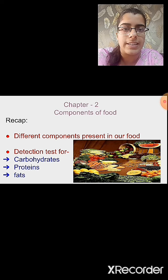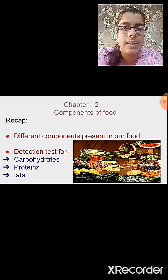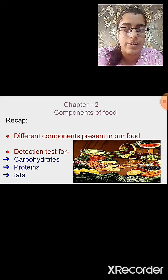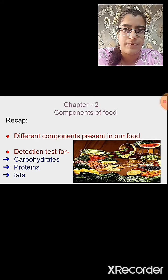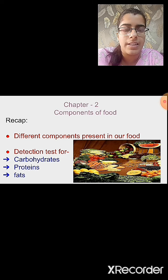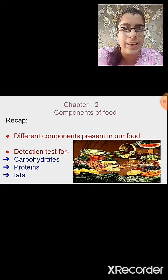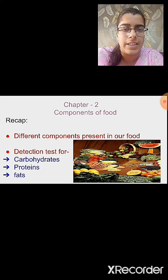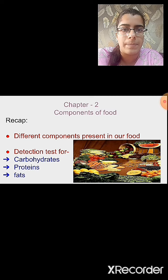We also studied the different food items that contain carbohydrates, proteins, fats, vitamins, minerals, roughage, etc., and the different roles of these nutrients in our body. Carbohydrates and fats are known as energy-giving food. Proteins are known as body-building food. Vitamins and minerals protect us from various diseases. Roughage helps in the digestion of food. Water helps to absorb various nutrients and keeps our body hydrated.